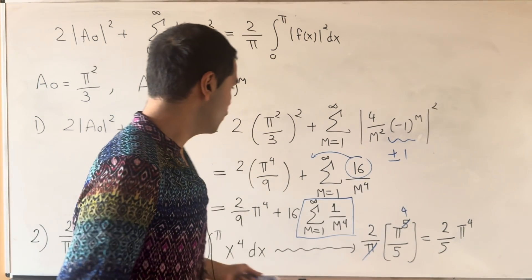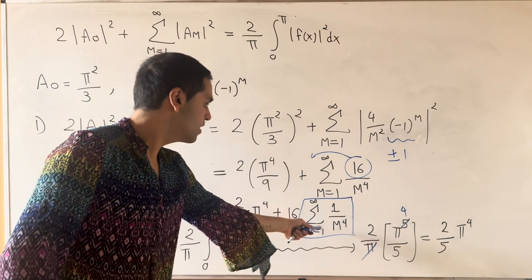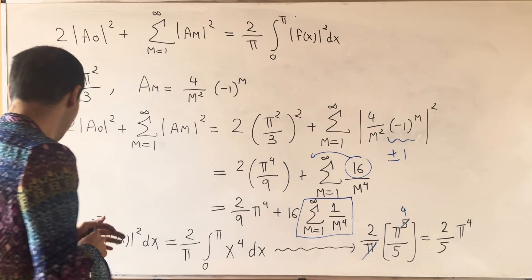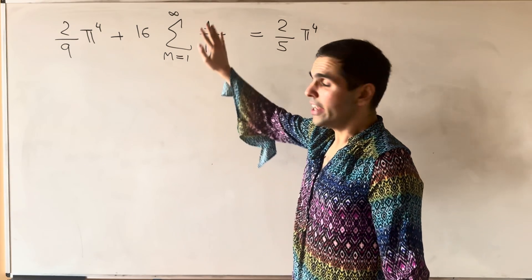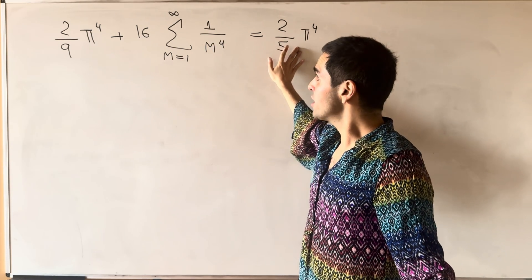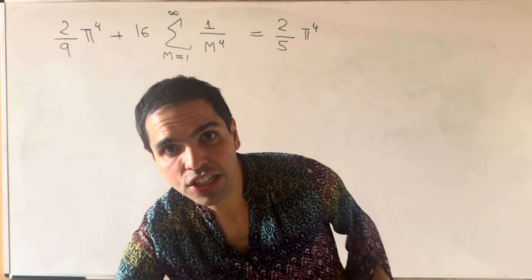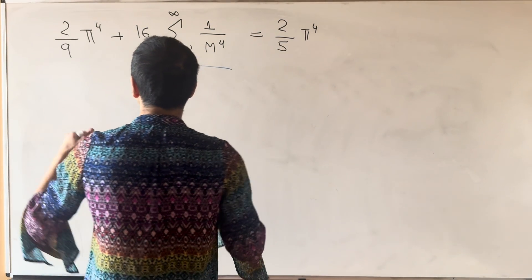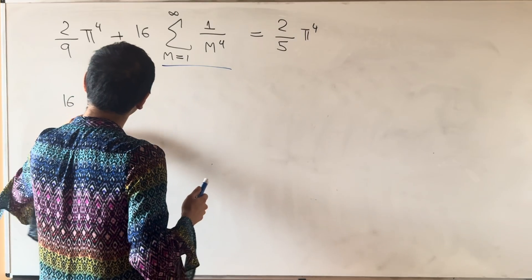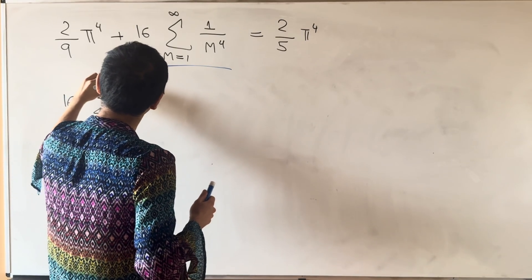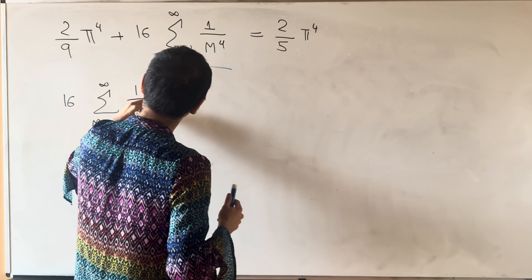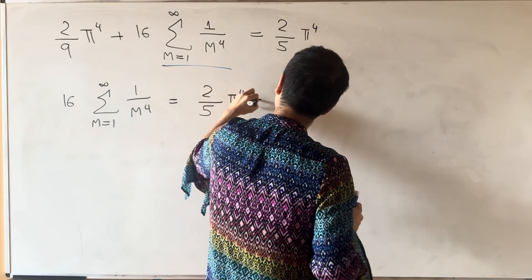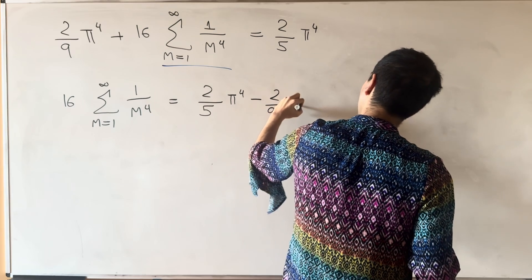And then all you have to do you have to equate this line with this line and then see what we get. So once again, if you set both sides equal you get the following identity which now you can solve for our famous sum. So what we get is 16 times the sum from 1 to infinity of 1 over m to the 4th is 2 fifths pi to the 4th minus 2 ninths pi to the 4th.